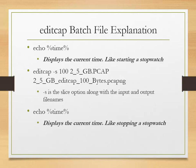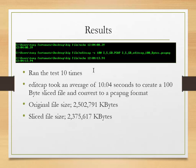The batch file uses the system variable %TIME% to print the current time at start and end, effectively timing the process. I ran the test 10 times and each test took an average of 10 seconds — very fast. The original trace file was 2.5 gigs and the sliced output was 2.3 gigs. The minimal reduction happened because most packets in my trace file were under 100 bytes, so there wasn't much to slice off.